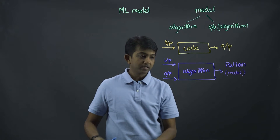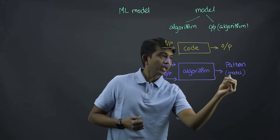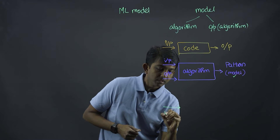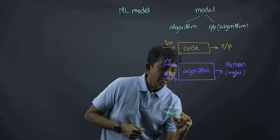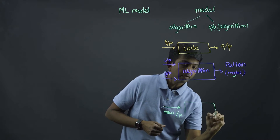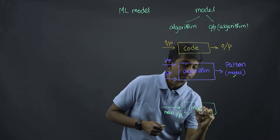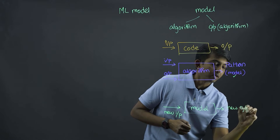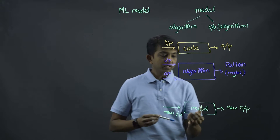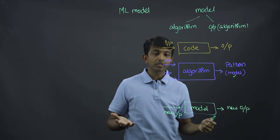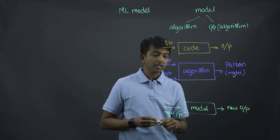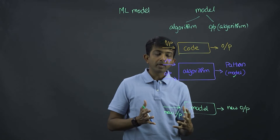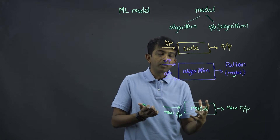So what do you do with this? Once we have this model, any new input that you have, you can feed this into the model and that will give you a new output. This is what is called prediction or inference technically — you have a dataset and you want to find out what could be the output for a new input.